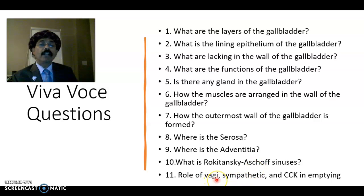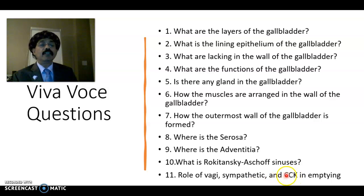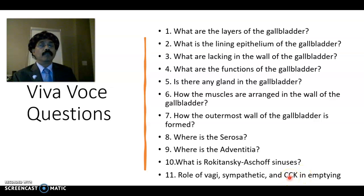Role of the vagus nerve: it contracts the muscle of the gallbladder and relaxes the sphincter. Sympathetic stimulation does the opposite — it is vasoconstrictive and constricts the sphincter of Oddi. CCK — cholecystokinin — provides the massive stimulus when fatty food is present in the duodenum to empty the gallbladder.